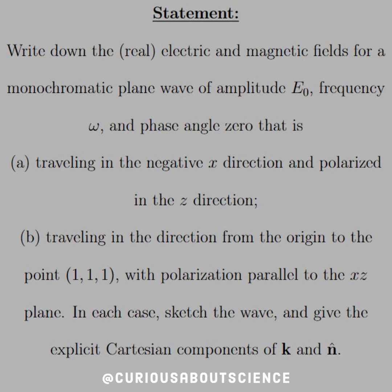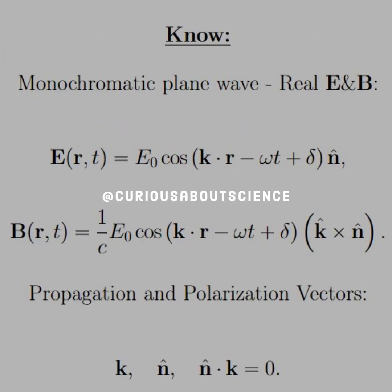Oh my, we got a lot to deal with, but I promise you it's going to look cool once we put it together. So what we need to know is that for a monochromatic plane wave, we just want the real E and B field parts.